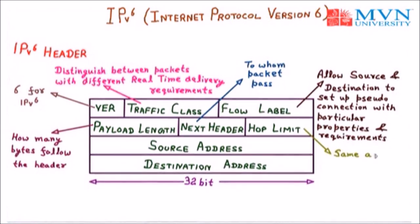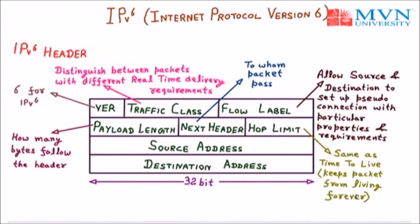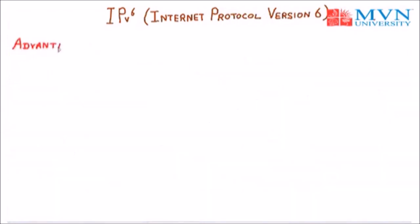Hop limit is the same as Time to Live in IPv4 — it keeps packets from living forever. Source address indicates from where the IPv6 packet was sent, and destination address indicates to whom the packet will be received. That is all about the IPv6 header, which is of 32 bits per row.